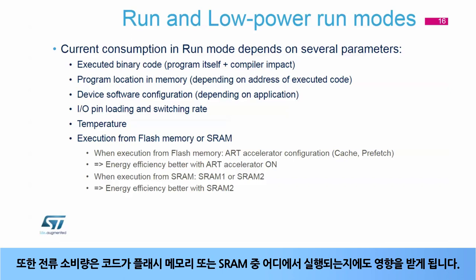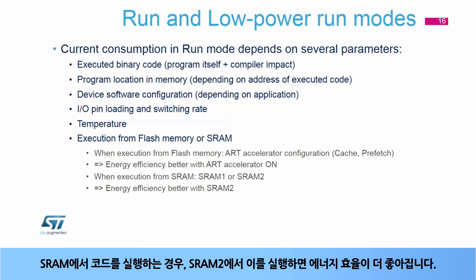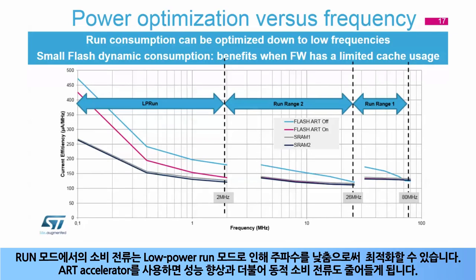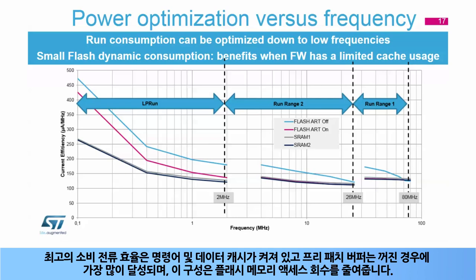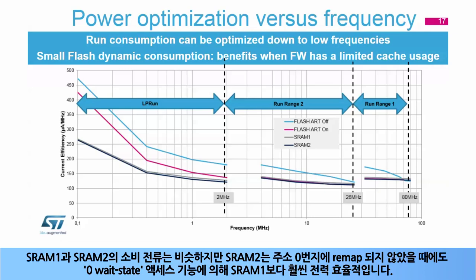The consumption also depends on whether code is executed from flash memory or from SRAM. When code is executed from flash, energy efficiency is better when the flash accelerator is enabled. When code is executed from SRAM, energy efficiency is better when executing from SRAM 2. The consumption in run mode can be optimized down to low frequency thanks to low-power run mode. Enabling the ART accelerator increases performance and reduces dynamic consumption. Best consumption is most often reached when the instruction cache is on, data cache is on, and pre-fetch buffer is off, as this reduces the number of flash memory accesses. SRAM 2 is much more power efficient than SRAM 1 when not remapped at address 0, thanks to its zero wait-state access.